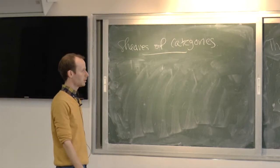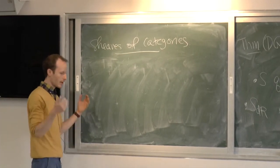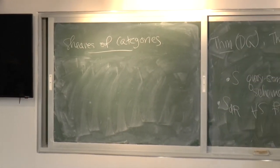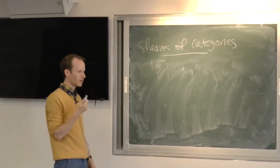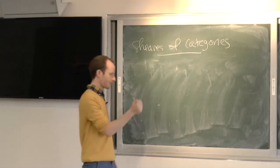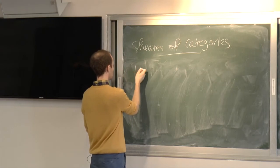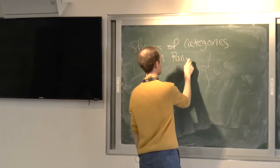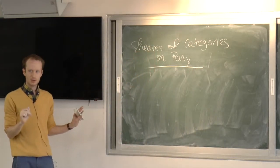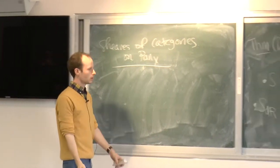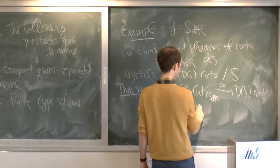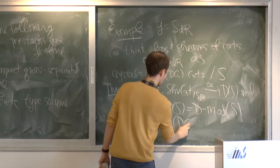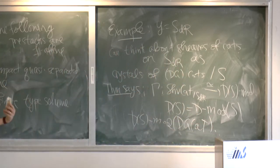Now we're at least equipped to talk about sheaves of categories—we have the language for it now. We know what a sheaf of categories on X_{dR}^I is. So a quick discussion: sheaves of categories on Ran space. For simplicity I'll do Ran X_{dR}. What is a sheaf of categories over Ran X_{dR}? D(S) modules are quasi-coherent or ind-coherent of S_{dR}, and I'll be loose about the difference between these for spaces like X_{dR} or X^I_{dR}.